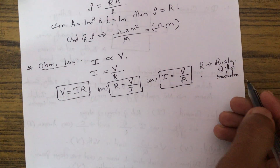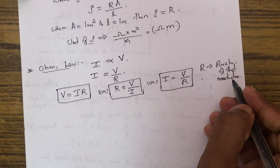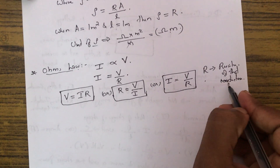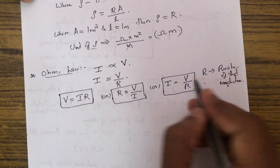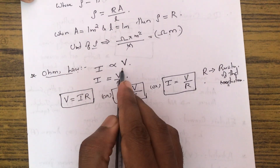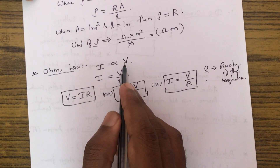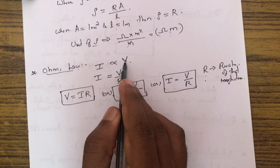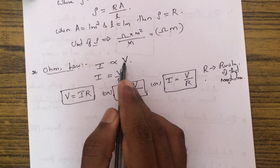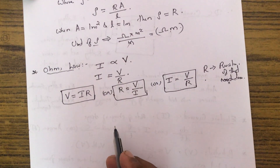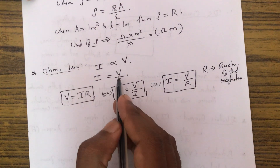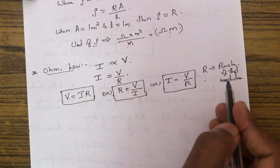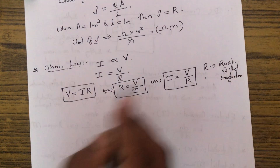So Ohm's law states that at constant temperature, the current flowing through a conductor is directly proportional to the voltage across its terminals, giving I = V/R, where R is the resistance of the conductor.